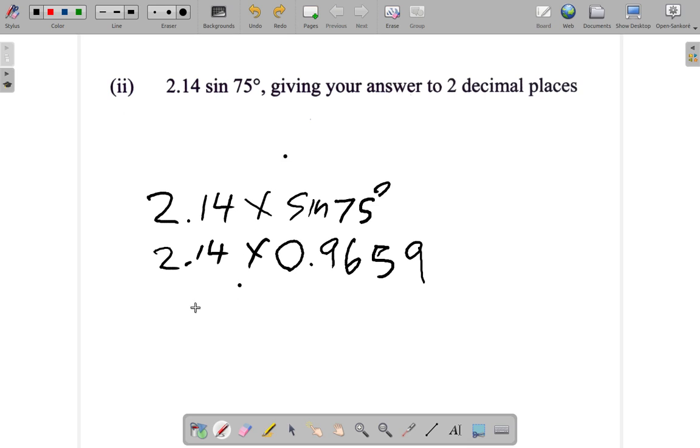Now the answer I got is 2.067 at three decimal places. Remember the number of decimal places is the number of digits to the right of the decimal point. But then I want to write my answer to two decimal places.